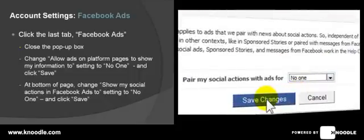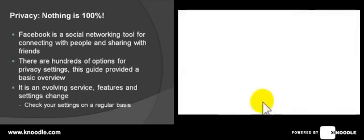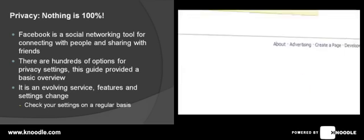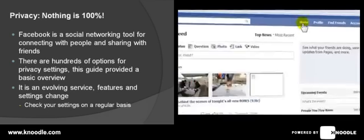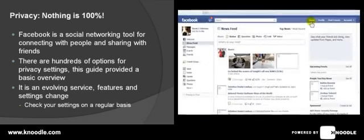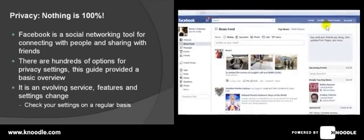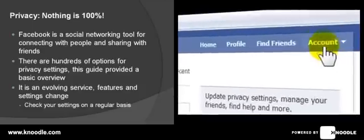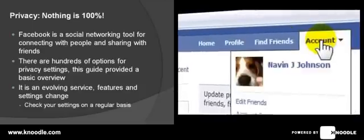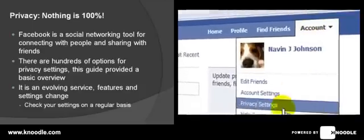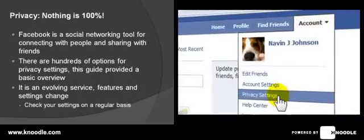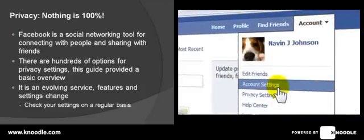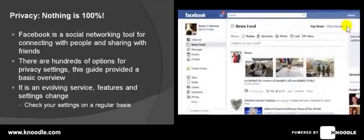That's it. Go back to the home page, and remember: if you want to change any of your privacy settings again, just click on the account tab and go into either 'Privacy Settings,' or if you want to change the security of your account, click on 'Account Settings.' That's the end of the Facebook privacy settings presentation.